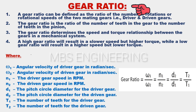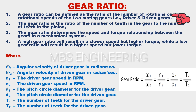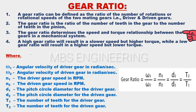A gear ratio can be defined as the ratio of the number of rotations or rotational speeds of the two mating gears, i.e., driver and driven gears. The gear ratio is the ratio of the number of teeth in the gear to the number of teeth in the pinion. The gear ratio determines the speed and torque relationship between the gears in a mechanical system.